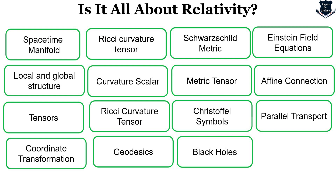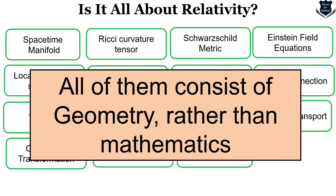Now, what is common in all these structures? What is common in spacetime manifold, curvature scalar, metric tensor, black holes, parallel transport? The answer: all of them consist of more of geometry rather than mathematics. Obviously mathematics is there — otherwise how will we calculate the geometry — but overall, from spacetime manifold to Einstein field equations, covariant derivative, parallel transport, Ricci curvature tensor, all of them actually deal with geometry rather than mathematics.